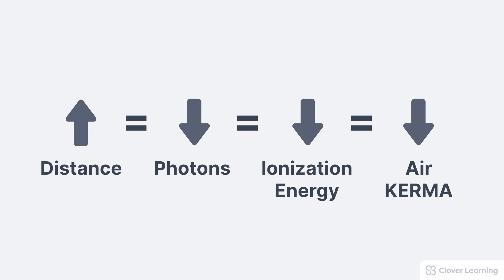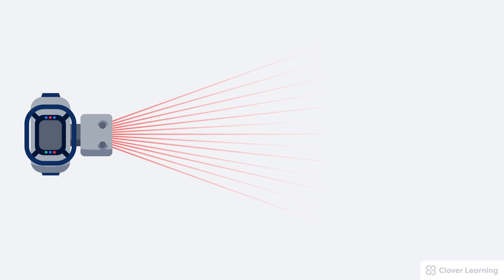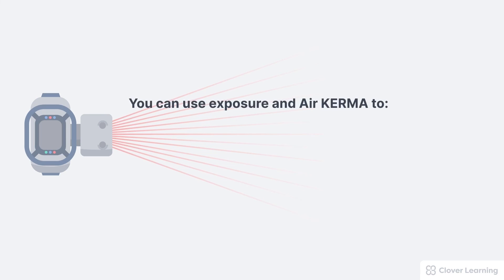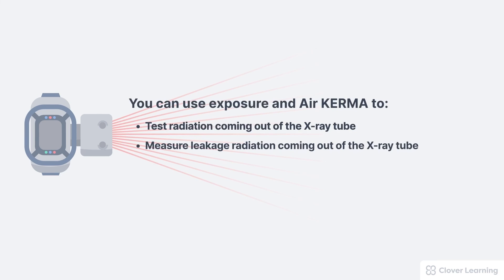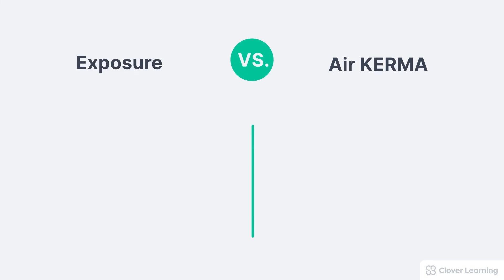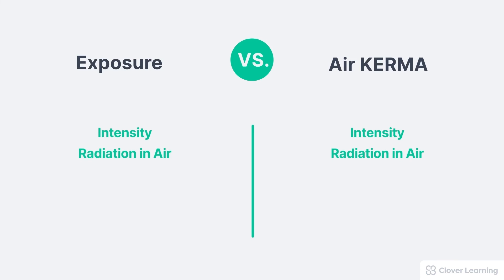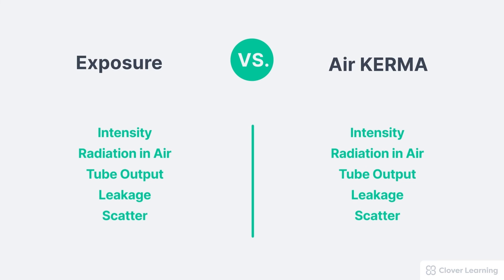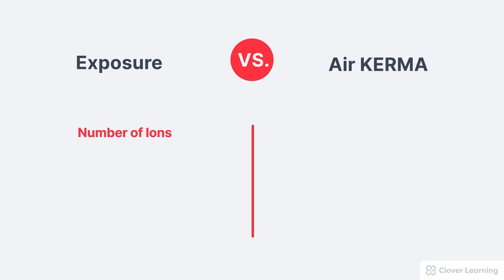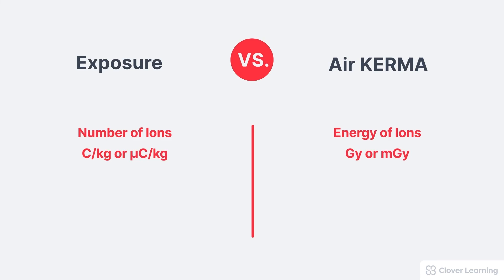So how exactly are these measurements used? Exposure and air KERMA are useful any time we're measuring radiation in air. For example, you could use them to test the radiation coming out of the x-ray tube, to measure leakage radiation, or to measure scatter radiation. Both measure intensity, both measure radiation in air, and both can be used to evaluate tube output, leakage radiation, and scatter radiation. The key difference: exposure measures only the number of ions created in air, while air KERMA measures the energy of those ions. Exposure is measured in coulombs per kilogram or microcoulombs per kilogram, while air KERMA is measured in gray, milligray, or microgray.